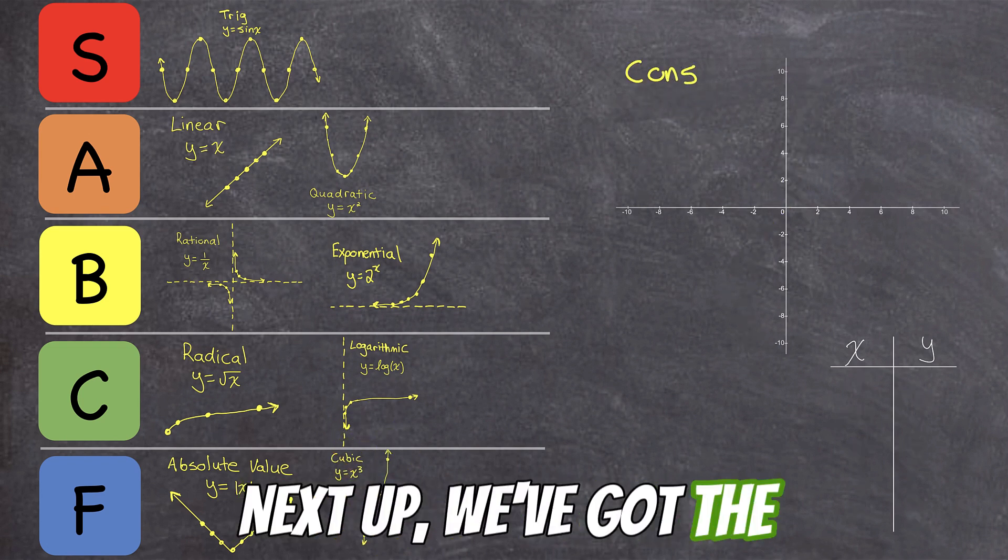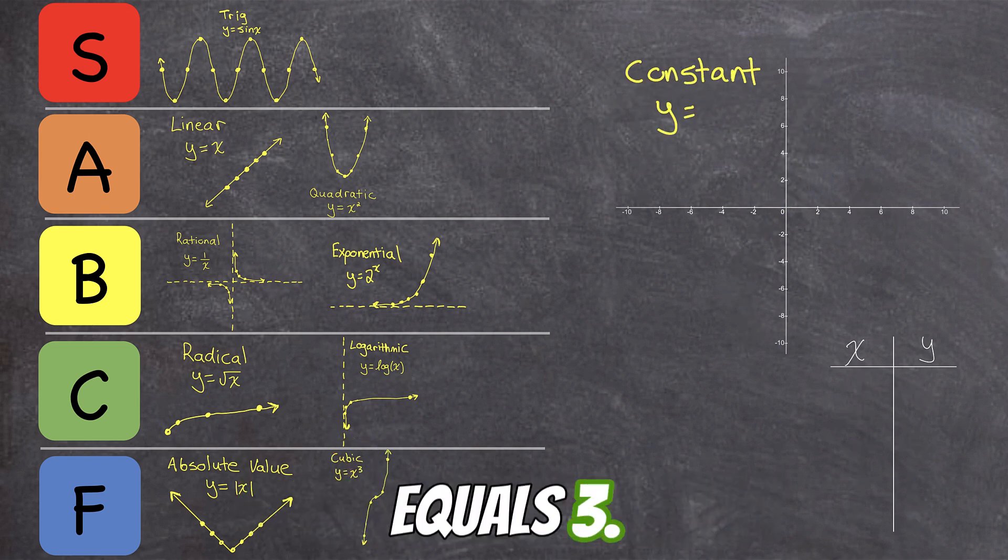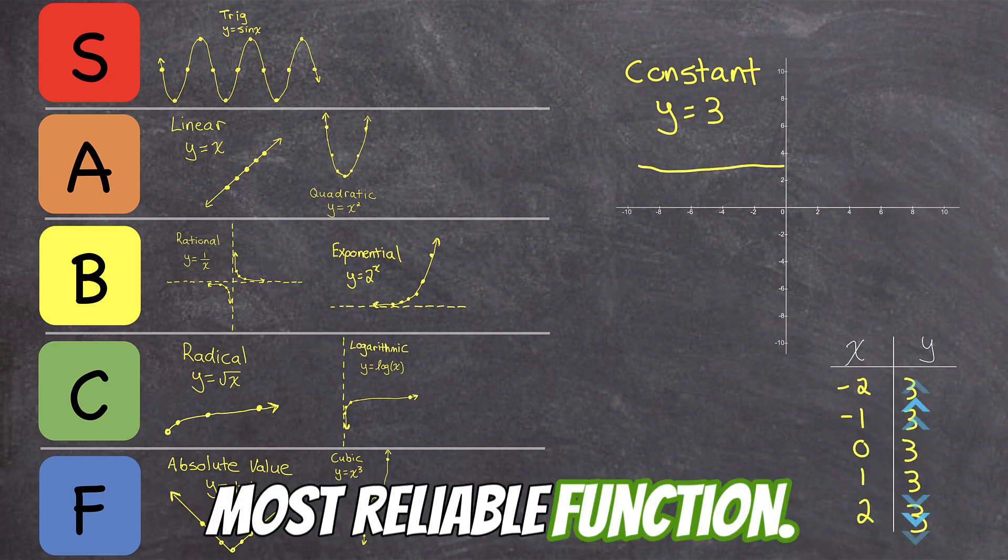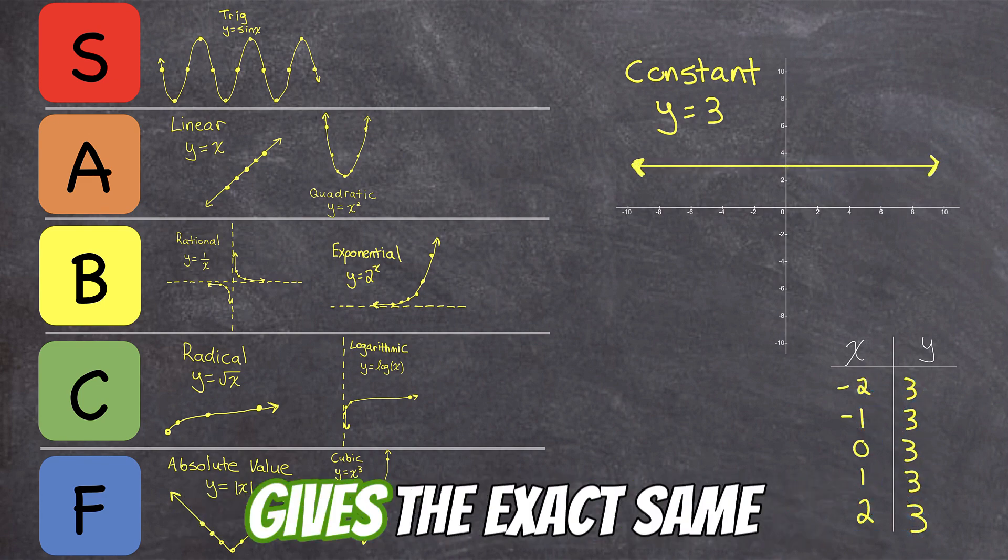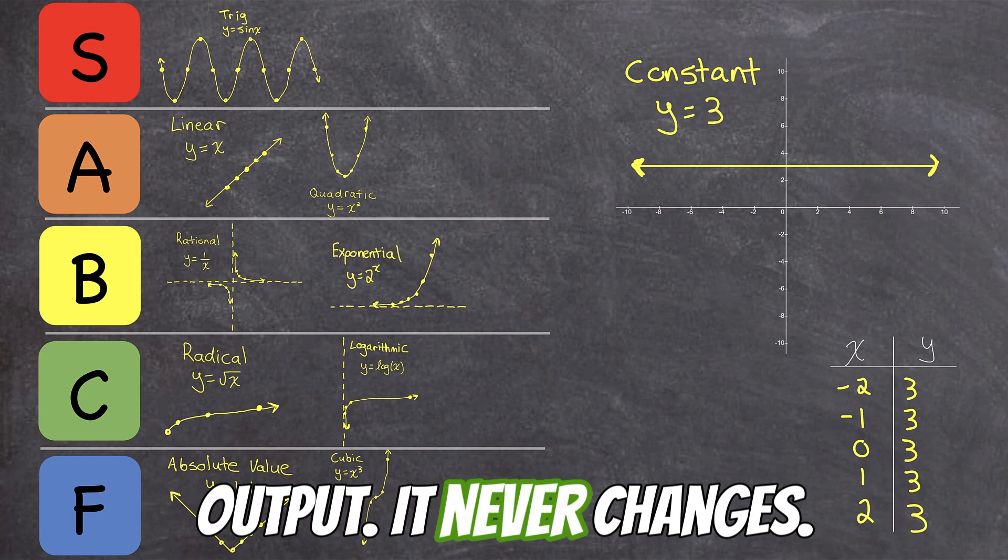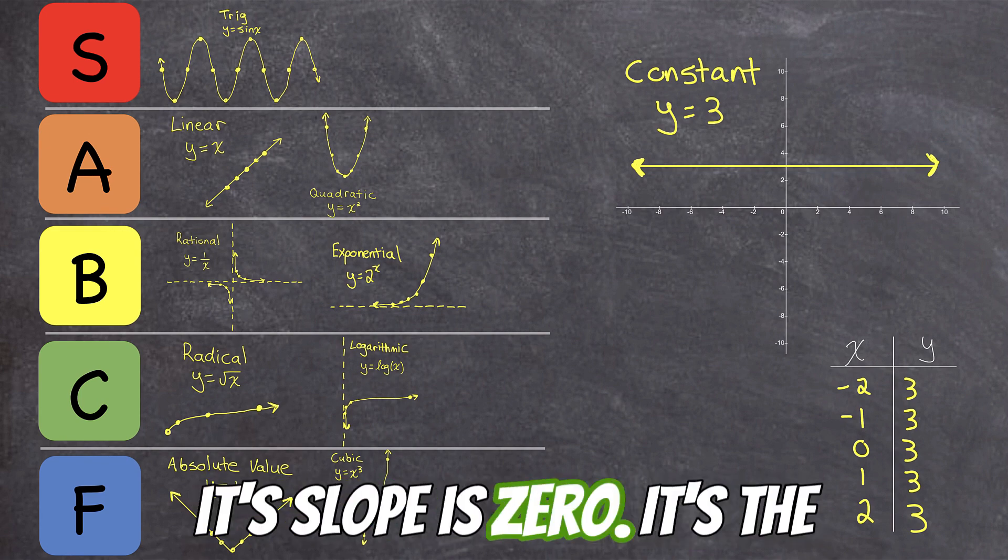Next up, we've got the constant function, y equals 3. This is the most reliable function. For every input you give, it gives the exact same output. It never changes. Its rate of change, or its slope, is 0.